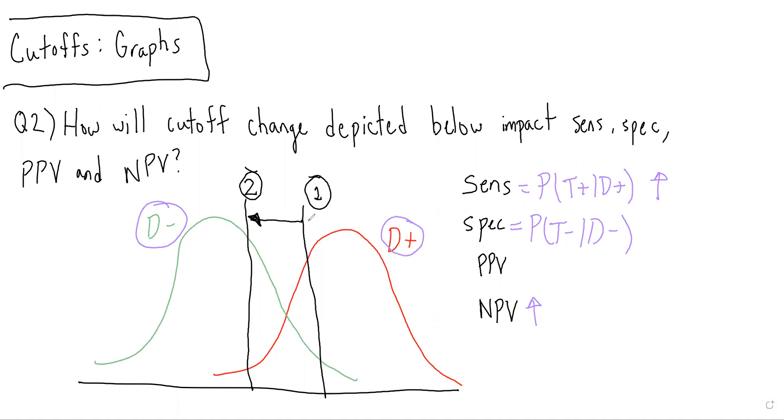In this case, we can see in one, there's all this additional area under this disease-negative curve that lies to the left of the cut-off that is lost when we move from cut-off one to cut-off two. Therefore, with this new cut-off, less of the area under the disease-negative curve lies to the left of the cut-off, and therefore specificity has decreased.